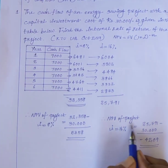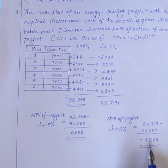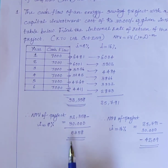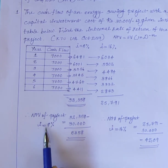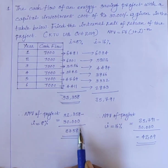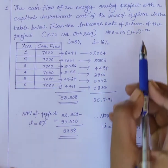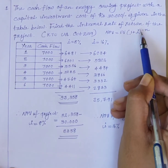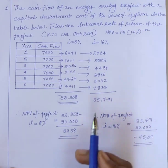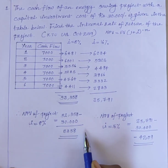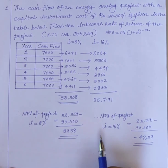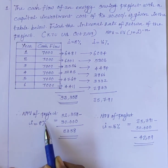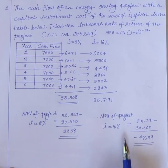So here, the net present value of the project is negative with a 16% rate of return, and the net present value of the project is positive with an 8% rate of return. It can be clearly seen that the discount rate, or the internal rate of return I, which results in the net present value of the project being 0, lies somewhere between 8% and 16%.